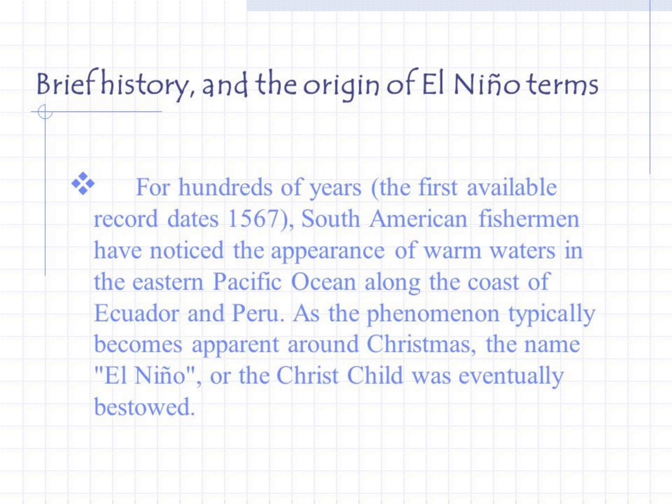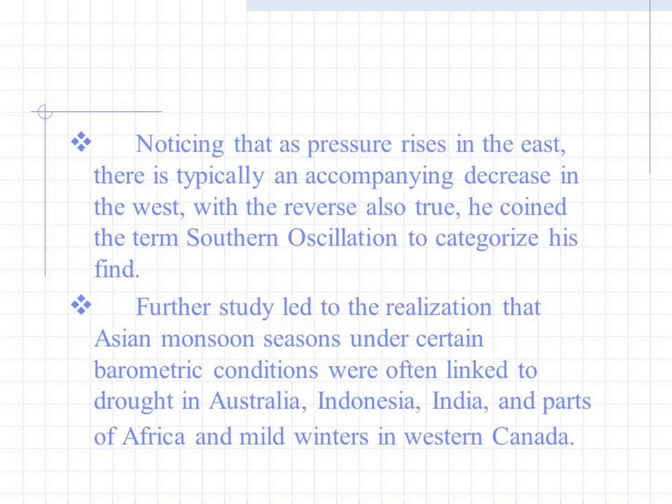Brief history and origin of El Niño terms: For hundreds of years — the first available record dates to 1567 — South American fishermen noticed the appearance of warm waters in the eastern Pacific Ocean along the coast of Ecuador and Peru. As the phenomenon typically becomes apparent around Christmas, the name El Niño, or 'the Christ child,' was eventually bestowed. Noticing that as pressure rises in the east there is typically an accompanying decrease in the west, with the reverse also true.